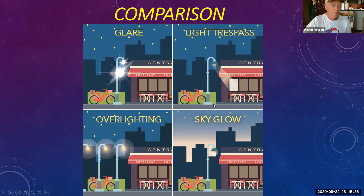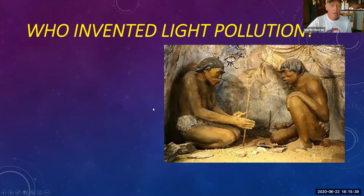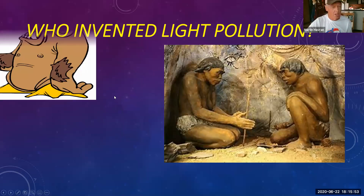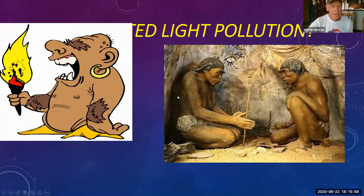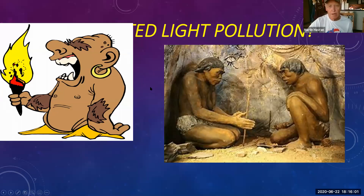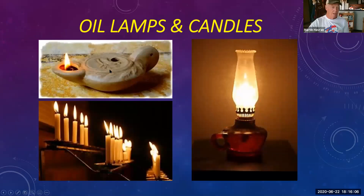When did light pollution begin? At some point back in the day, some cave person figured out how to make fire — that's how it got started. This gentleman here looks like a distant cousin of mine. Eventually, people moved beyond open flames to oil lamps and candles. In the upper left we have examples of early candles or oil lamps.